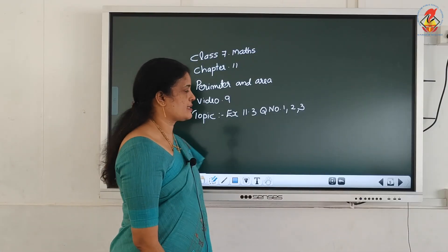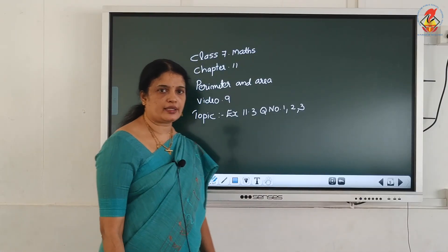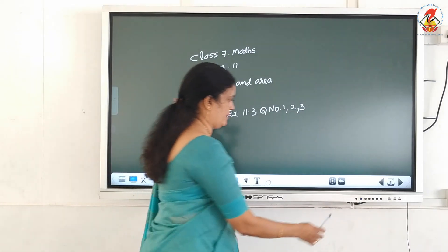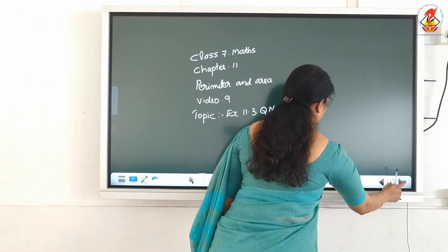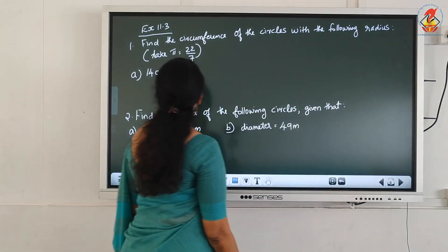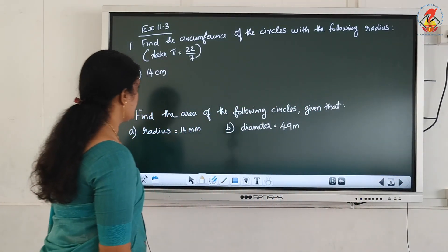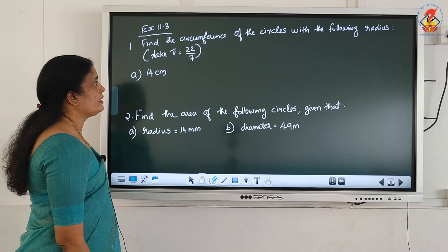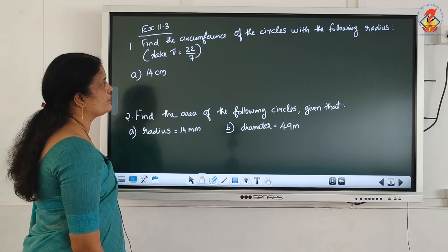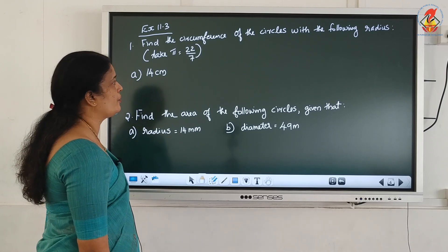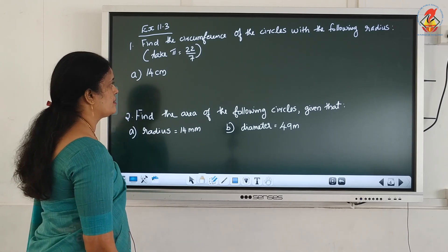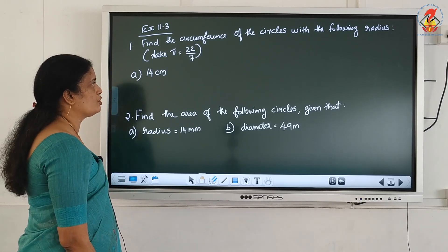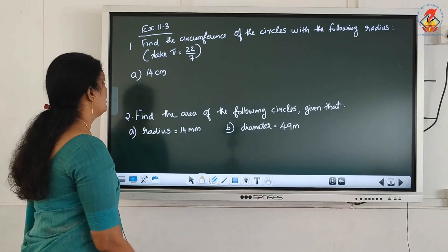Next topic: Exercise 11.3, question numbers 1, 2, and 3. Find the circumference of circles with the following radius. Take pi equal to 22 by 7.